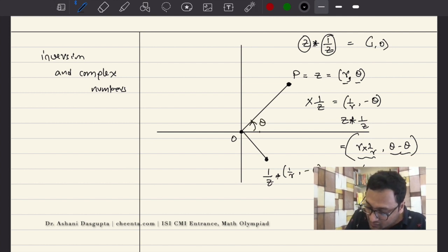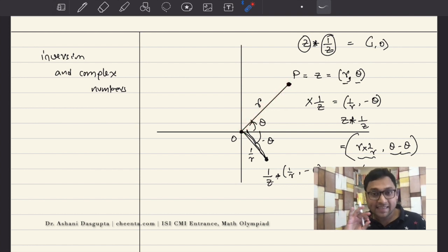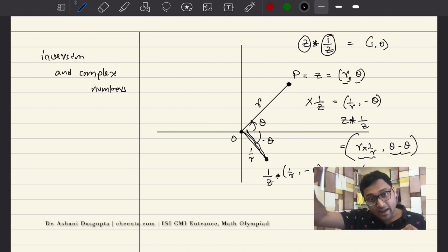So, 1 over Z is simply here. It is (1/R, -theta). So, if this is theta, this is -theta. And if this length is R, this length is 1 over R. Right? Okay. So, we are almost done. We now need this length to be in this particular direction. Because the inverse image should be same as in the line of OP. That is how inversive geometry works. P goes to another point, which is on the same line as OP.